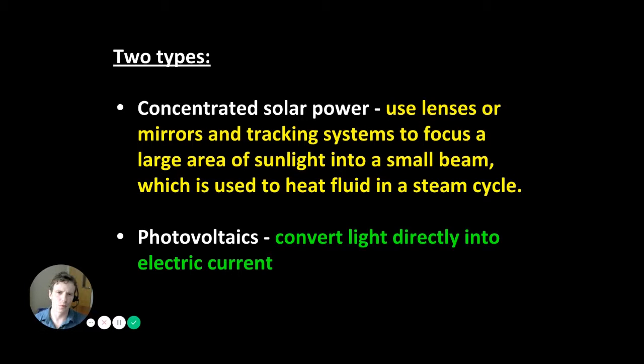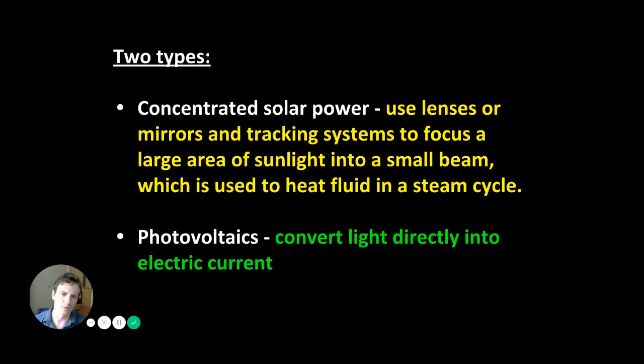There are two main types of solar power used in the United States. The first is concentrated solar power, and the second is photovoltaics. With concentrated solar power, we use lenses or mirrors and tracking systems to focus a large area of sunlight into a small beam. That focused sunlight heats a working fluid in a steam cycle that spins a turbine and generates electricity, not unlike nuclear, coal, and natural gas steam-based generation. With photovoltaics, we convert light directly into electrical current.